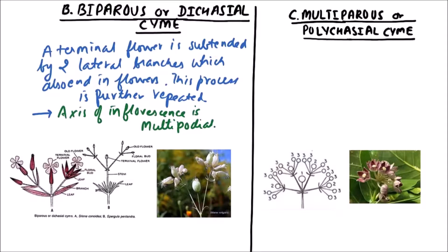Here we can observe that this is the stem and this is the terminal flower. It will subtend two lateral branches which will again end in a flower. That branch will also repeat this process — it will give rise to two lateral branches ending in a flower. So first, second, and third — this is the pattern of branching in biparous or dichasial cyme.